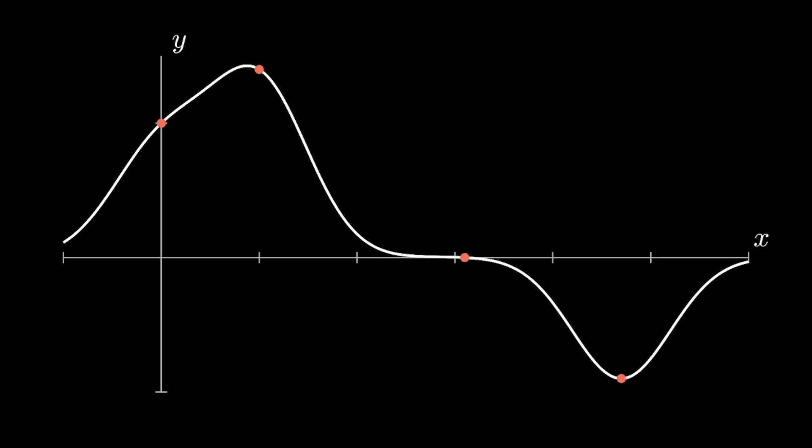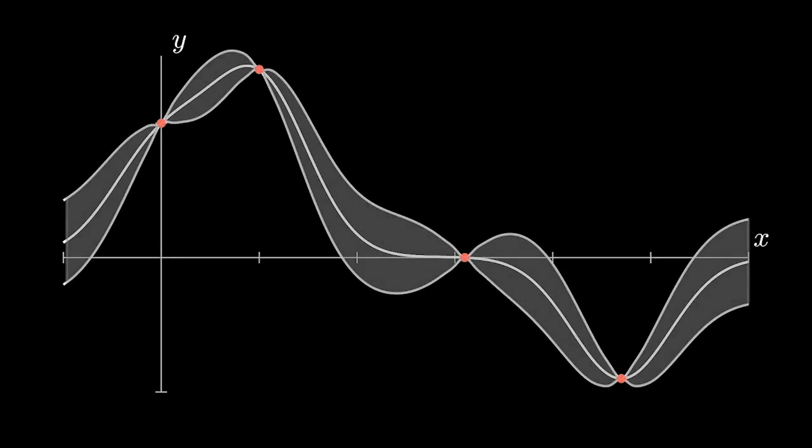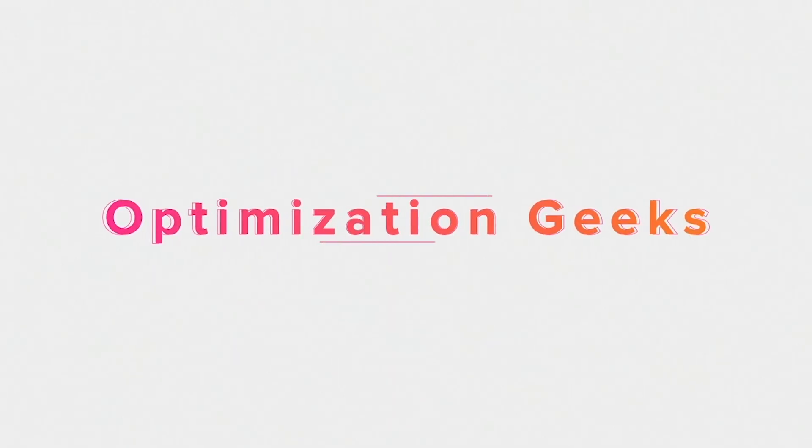In the end, we cannot just make a best guess but also quantify uncertainty since we define a probability measure. So meaning that we not only have one function but a range where we would expect most of our functions to be in. Putting this all together, this is called a Gaussian process regressor.